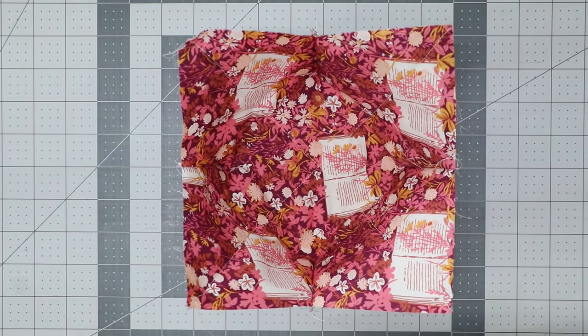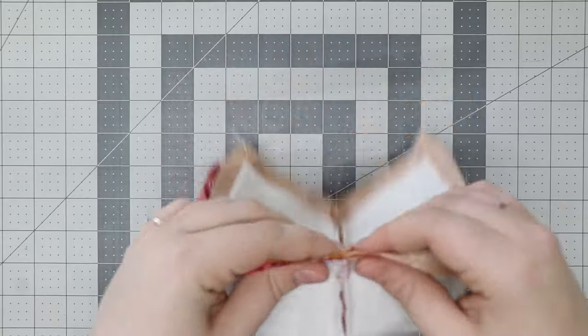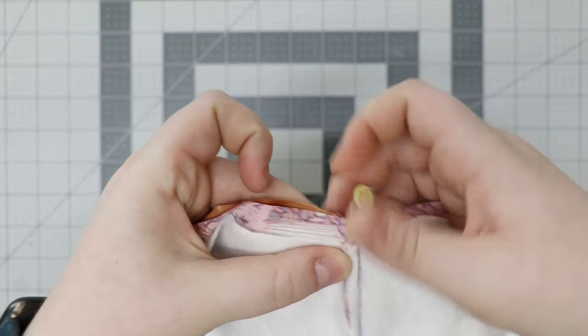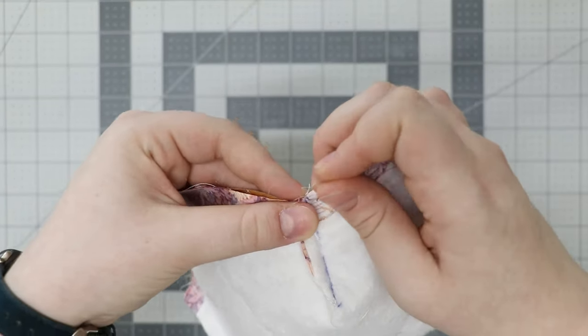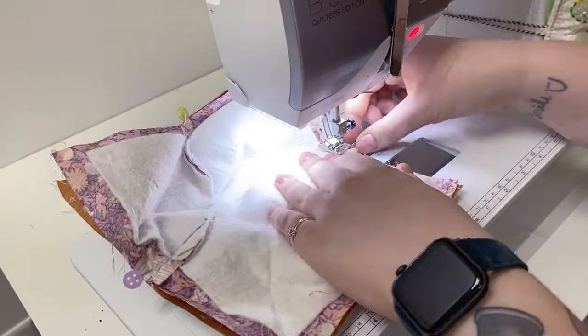Turn one piece right side out and nest the two together pinning the seams. Sew around the entire square leaving a two inch opening for turning.